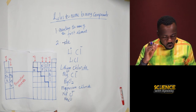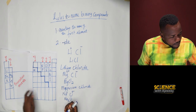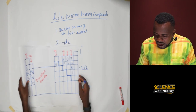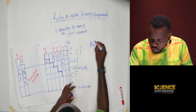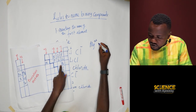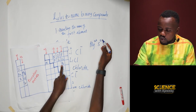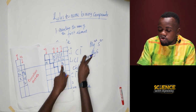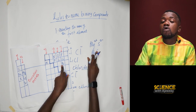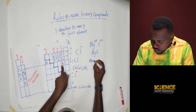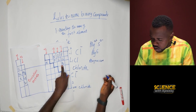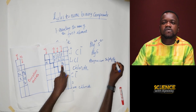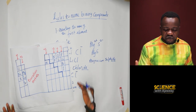We can also have magnesium and sulfur. Magnesium is 2+ because it's in group two, and sulfur is in group six so it's S²⁻. Because the charges are equal they cancel out, giving MgS. The compound name is magnesium sulfide.